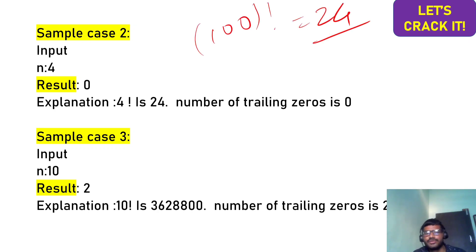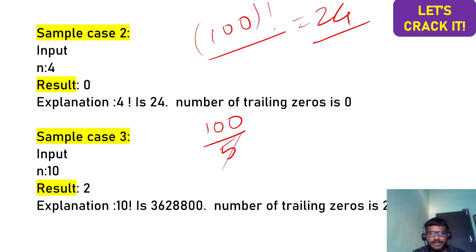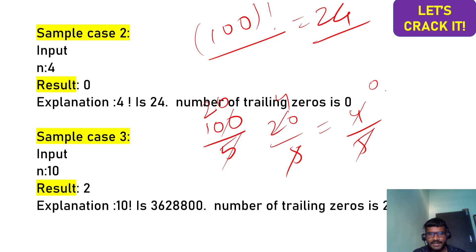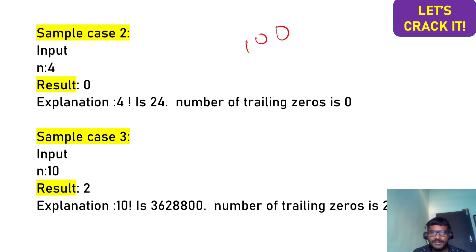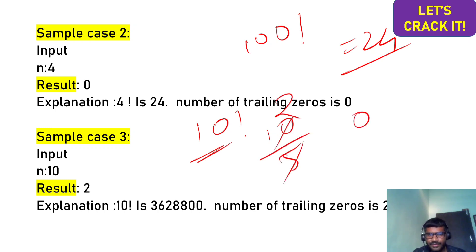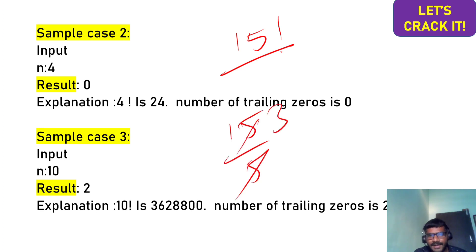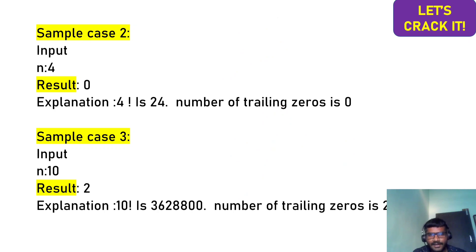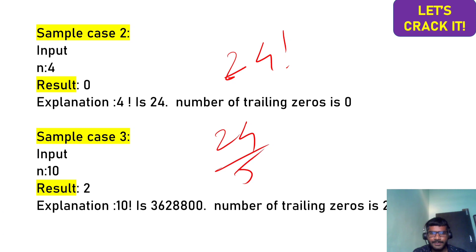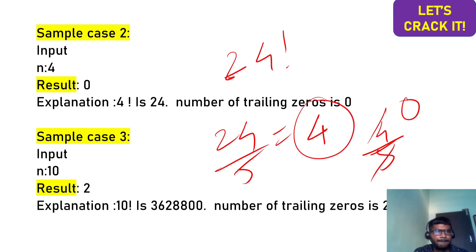For 100 factorial, there are 24 trailing zeros. The logic: divide 100 by 5 to get 20, then divide 20 by 5 to get 4, then divide 4 by 5 to get 0 — keep going until n becomes 0 and sum up the quotients. For 10: 10÷5=2, then 0. For 15: 15÷5=3 directly. For 24: 24÷5=4 remainder 4, then 4÷5=0, giving 4 trailing zeros.